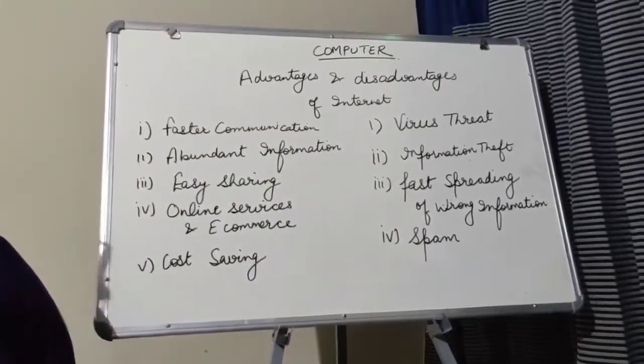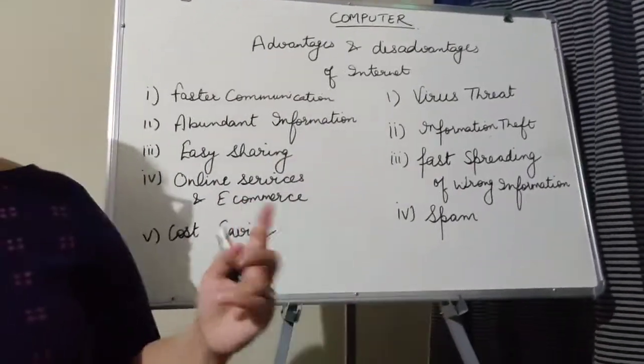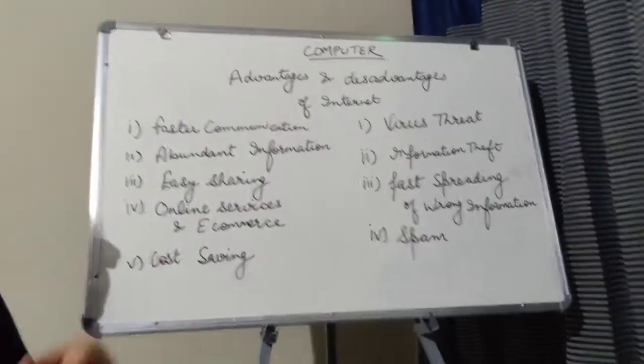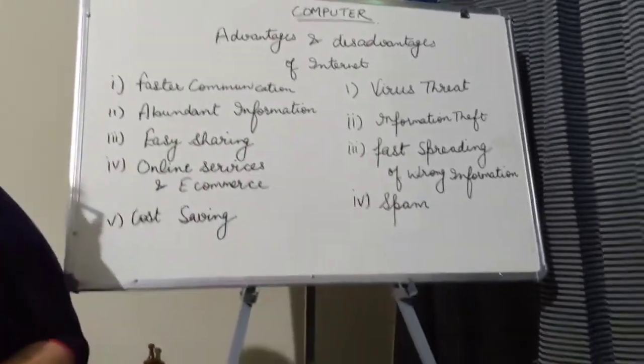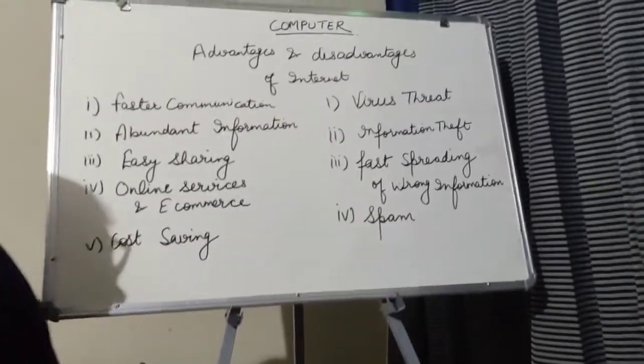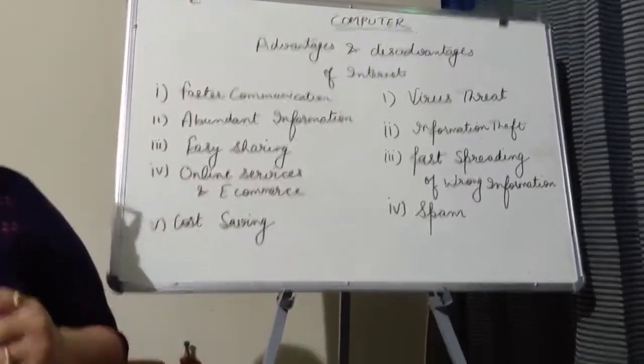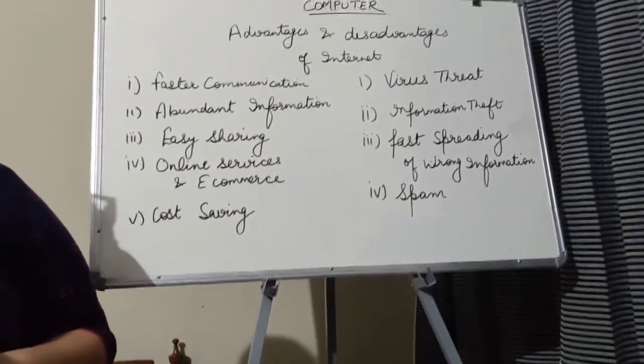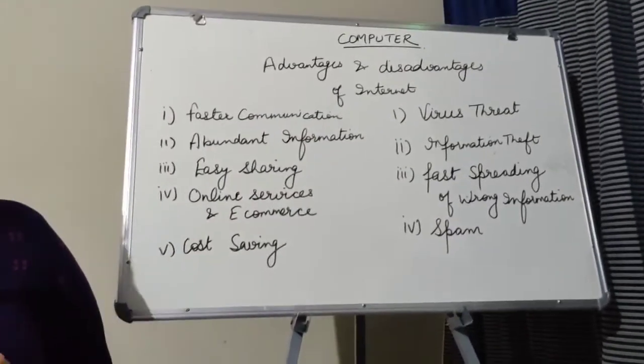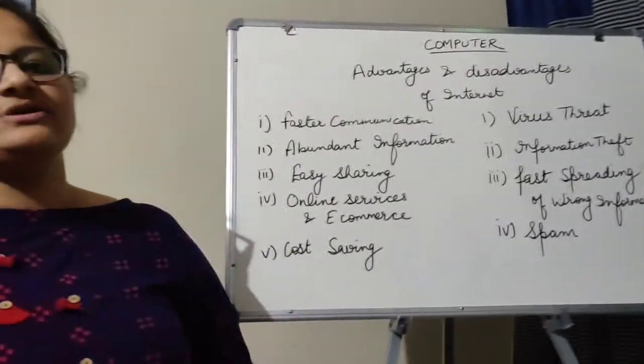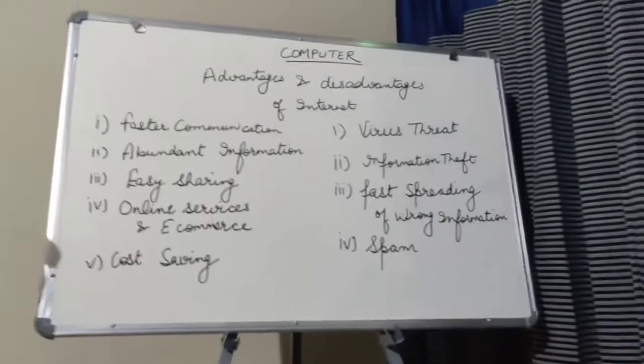Abundant information. Abundant matlab ample of. Bahut sari information mil jati hai. So internet se aap ko bahut sari information kisi bhi cheez ke baare mein mil jati hai. Matlab uske baare mein basic se leke bahut deep tak information aapko kisi cheez ke baare mein chahiye, to you can get.